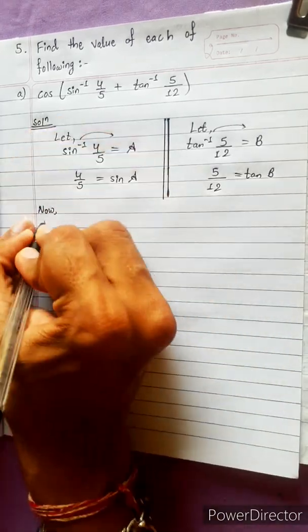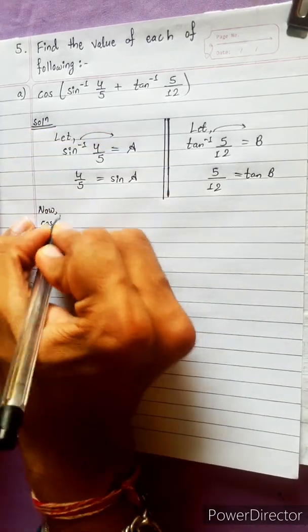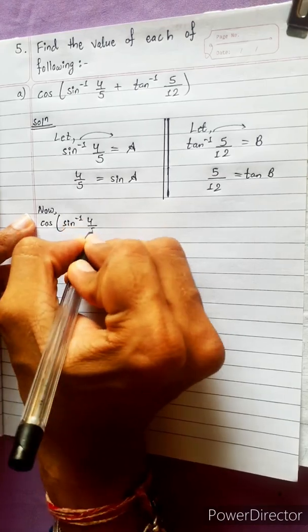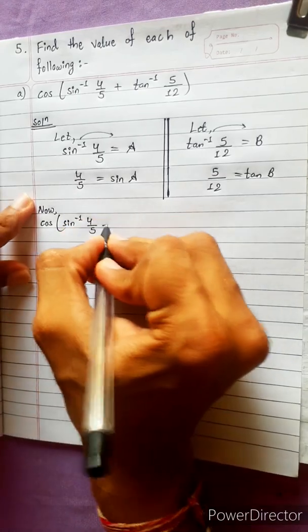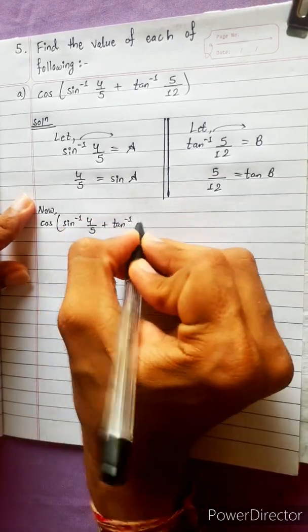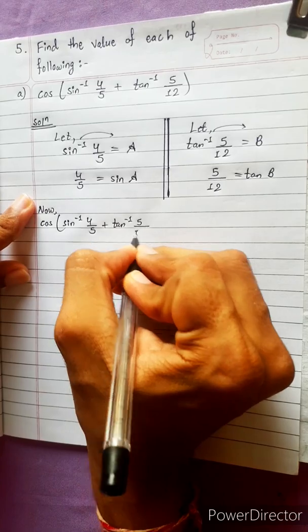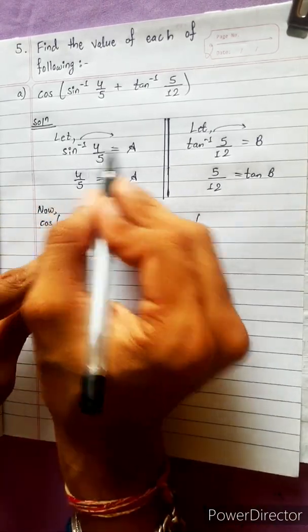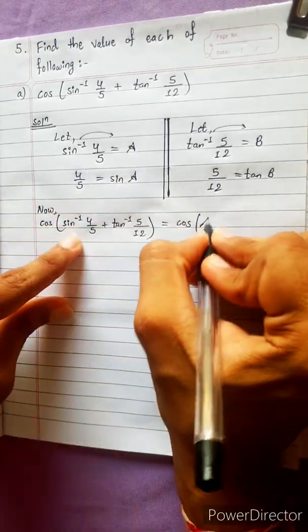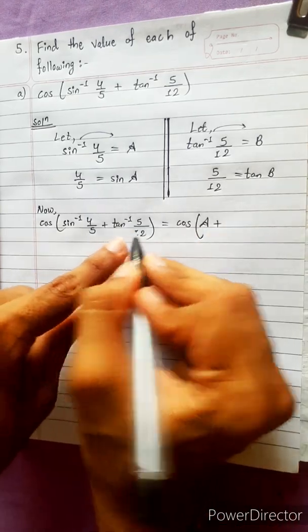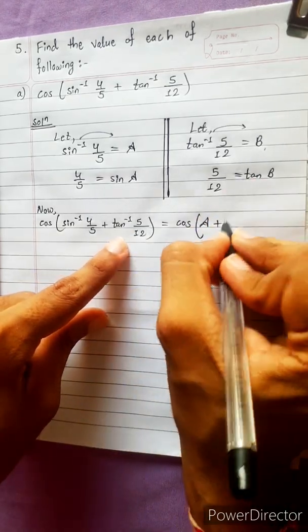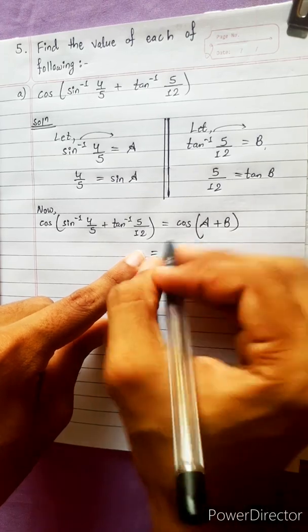In this question, the problem is to find the value of sin⁻¹(4/5) + tan⁻¹(5/12), which equals cos(A + B). We set cos⁻¹(4/5) = A, so sin A = 4/5, and tan⁻¹(5/12) = B.